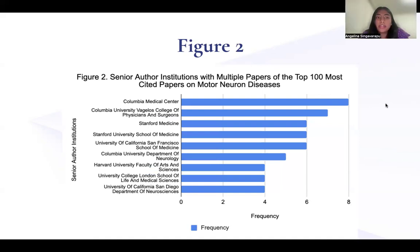Figure two looks at the senior author institutions with multiple papers of the 100 most cited papers on motor neuron diseases. On the x-axis you can see the frequency, and on the y-axis you can see the senior author institutions. The highest number was eight, and that was from Columbia Medical Center.